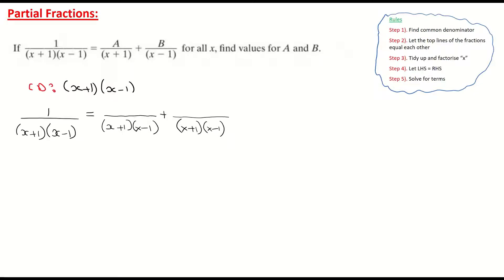I already have A on the top of my first fraction and B as the numerator on my second fraction. Look what's happened: in my first fraction, I've brought in the x minus 1 on the bottom, so if I bring in x minus 1 on the bottom, I must multiply the top by x minus 1. And it's the same on the next fraction — I've brought in the x plus 1, so I need to also bring in an x plus 1 on the top to balance out that fraction. Whatever I do to the bottom, I must do to the top.